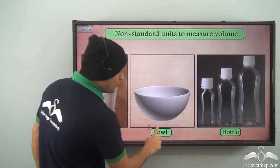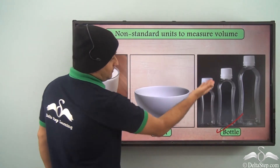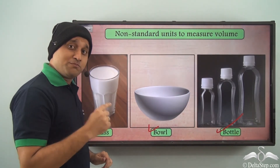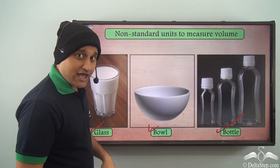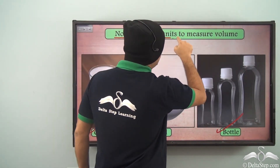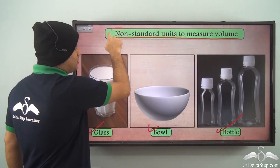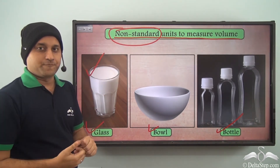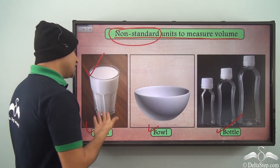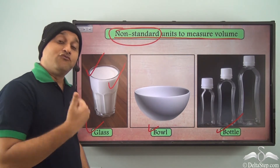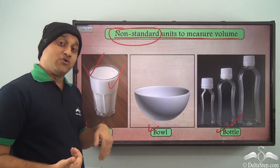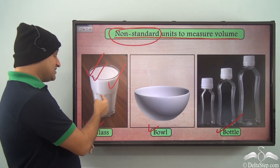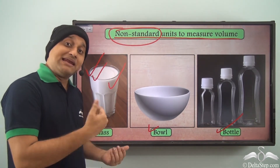You can use all these different things to measure the volume of liquid you need — it can be a glass, a bowl, or a bottle. Bottles can even be of different sizes. However, all these are non-standard units to measure volume. Why non-standard? Because the glass one family uses may hold a different volume than the glass at your house, so it is not standard.